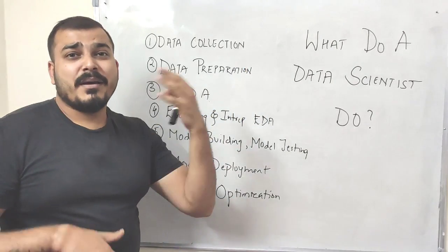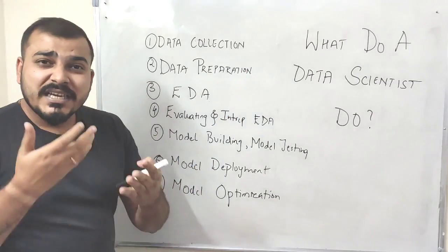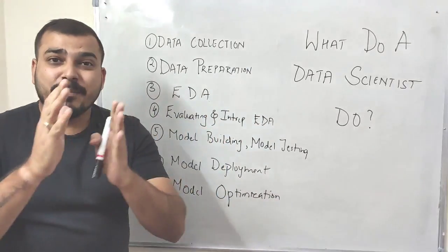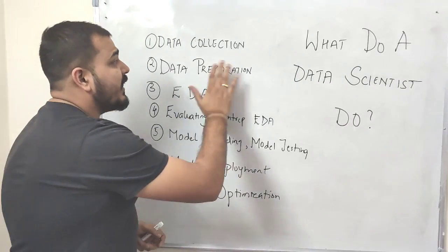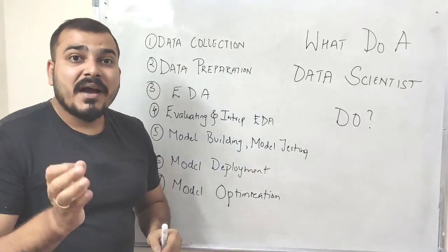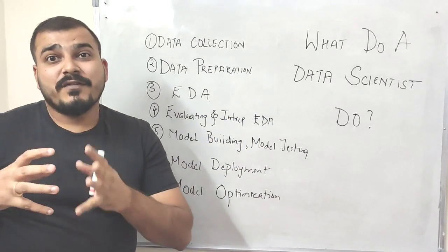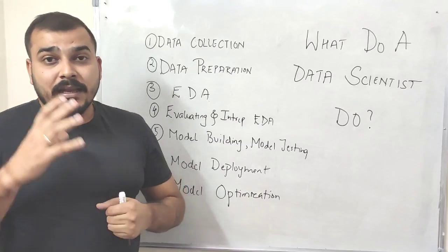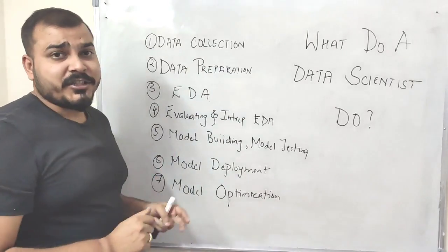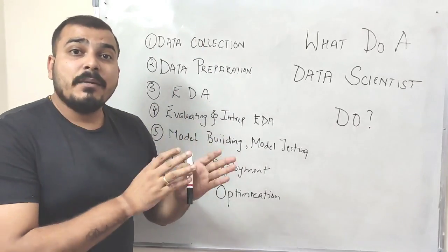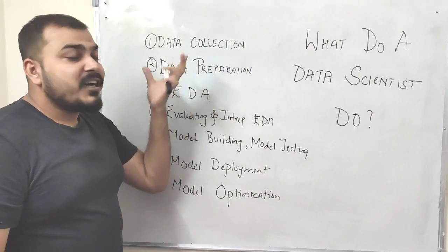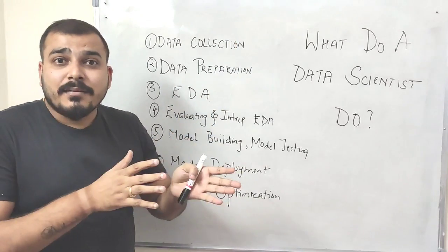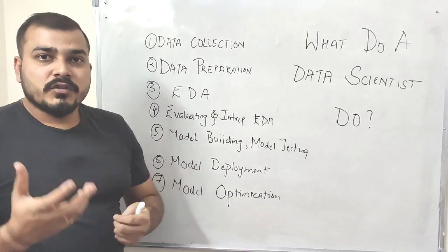Raw data may be in JSON or XML format, so we convert it to CSV or Excel format so the data is represented in tabular form. In data preparation, a lot of pandas and numpy will be used — data frames, series, and all pandas functionalities. Also, during data collection, a big data engineering team may store the data in a Hadoop database, NoSQL database, or relational database depending on project requirements.